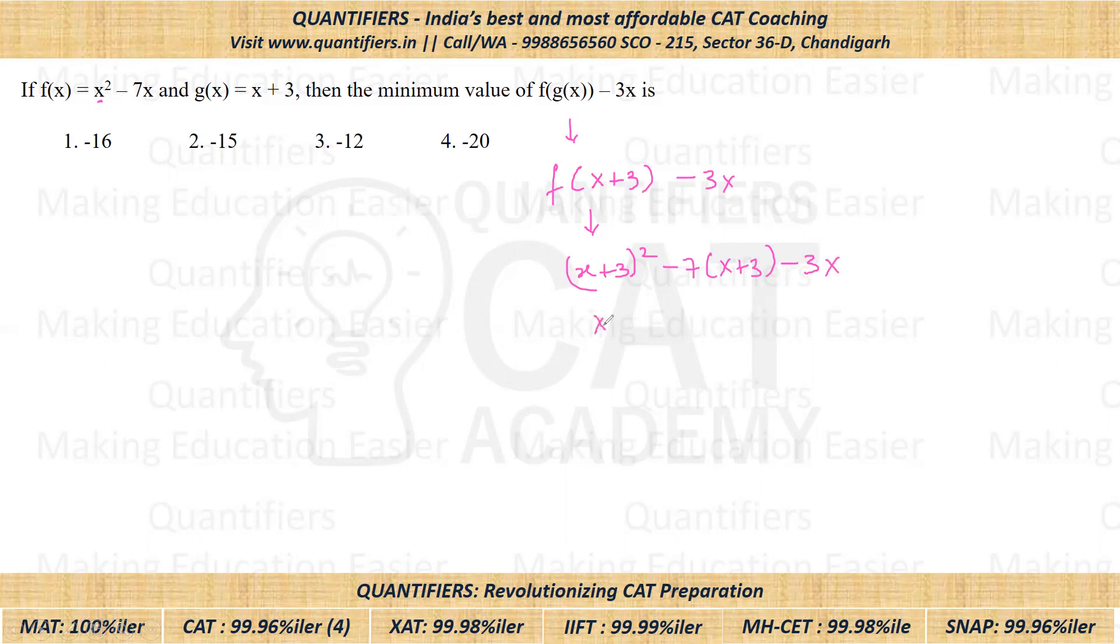So now (X plus 3) whole square is X square plus 9 plus 6 times X minus 7 times X.